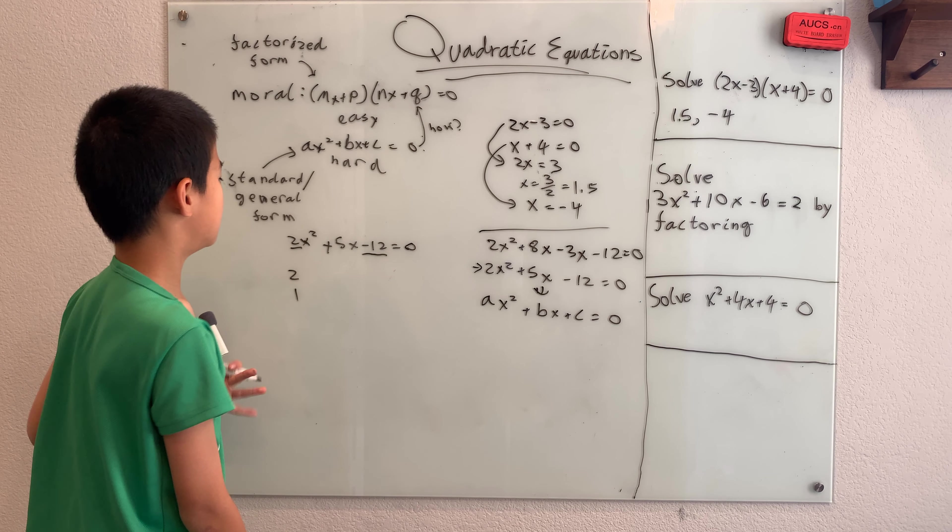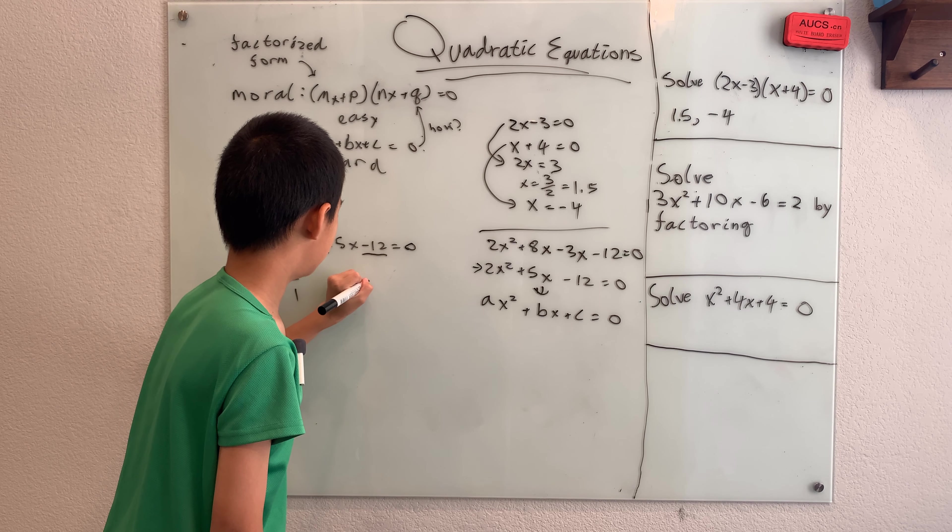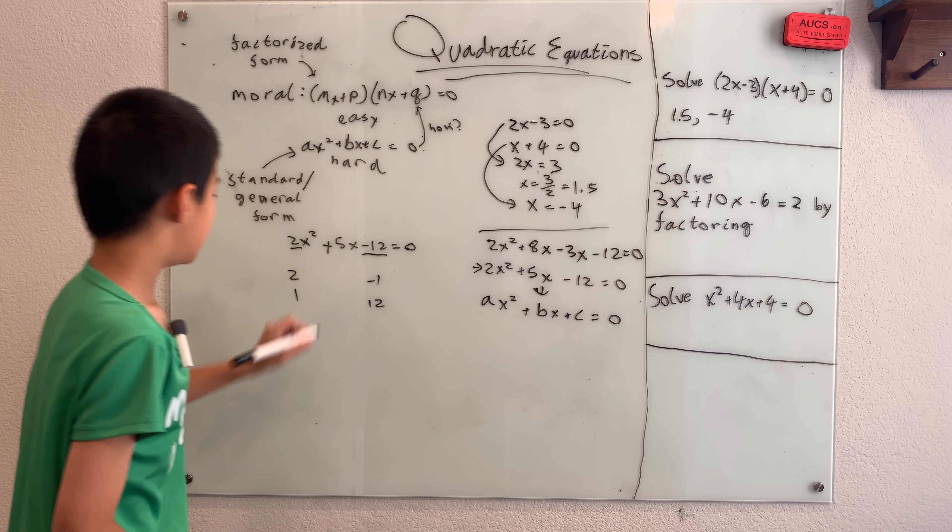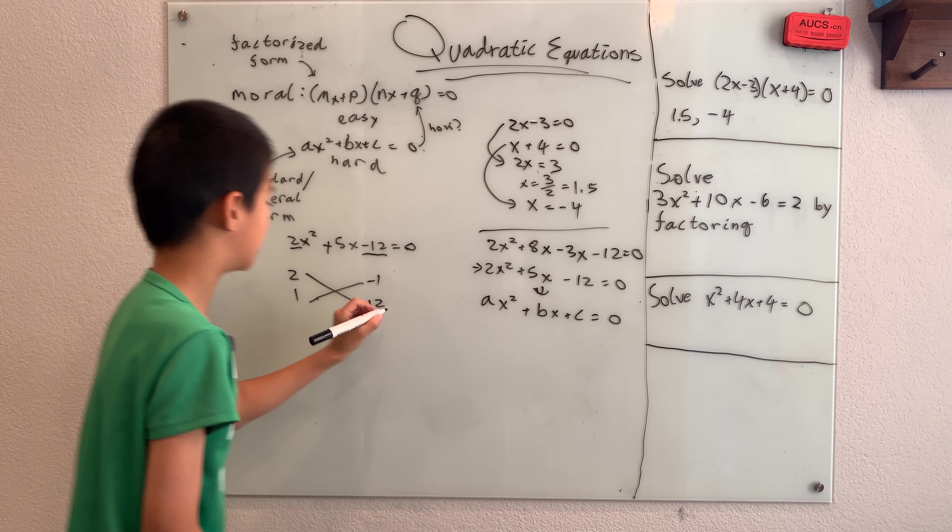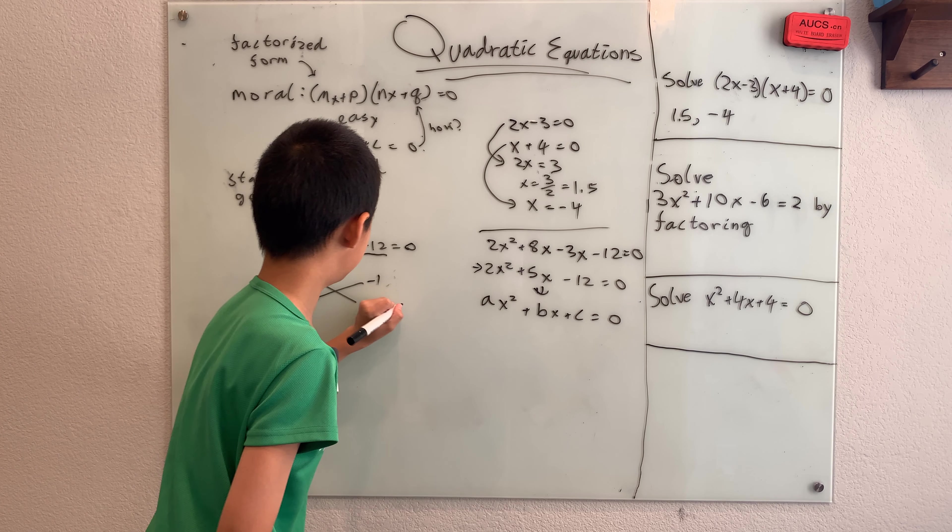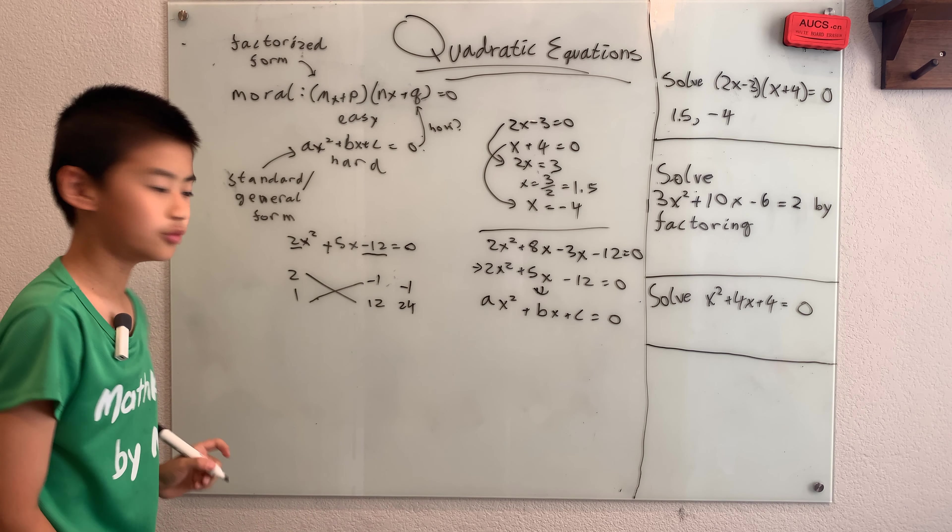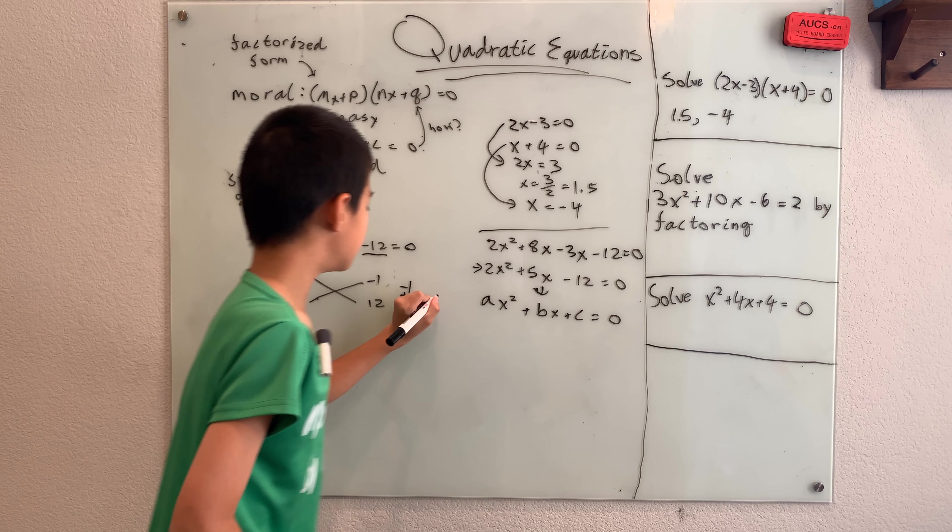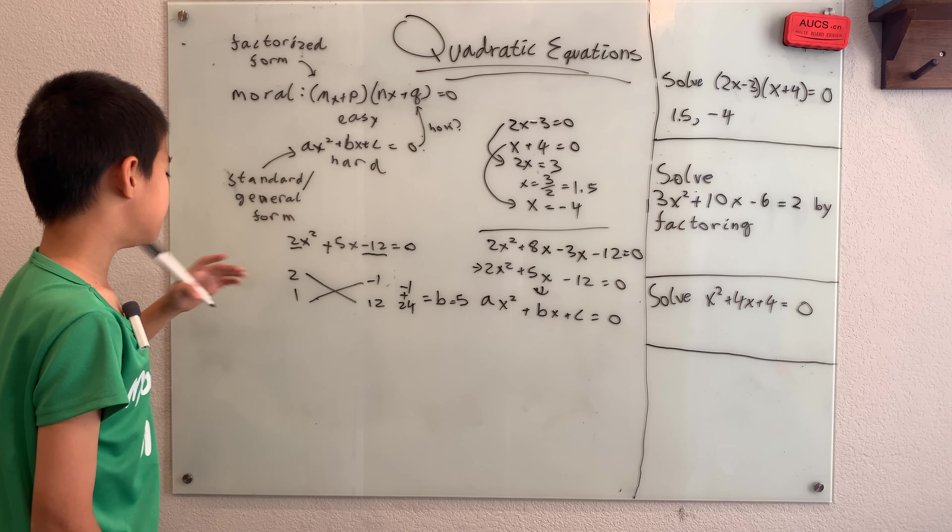Well, 12 isn't prime, so there's multiple ways to break it up, but I'm just going to choose one. Let's say pick negative 1 and 12. And then this is called cross-multiplying, and what you do is you take these two factors and you cross-multiply them together. Well, 2 times 12 is 24, and 1 times negative 1 is negative 1, and then you add these two sums up. And if their sum is equal to b, the b here is 5, then you've found the factorized form.